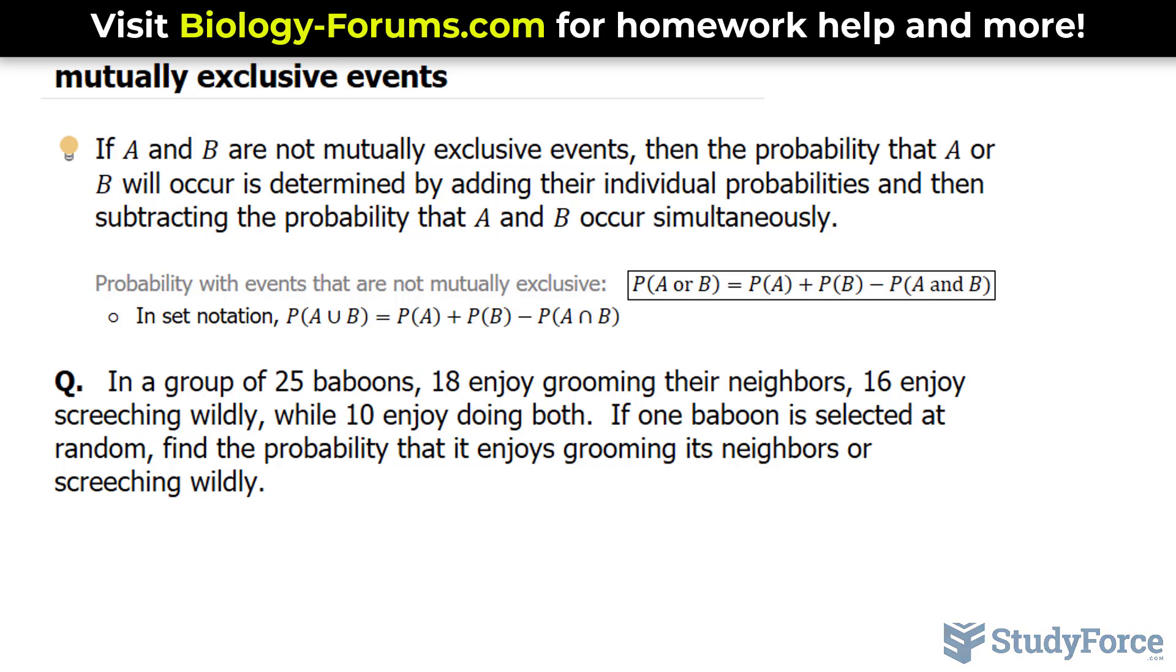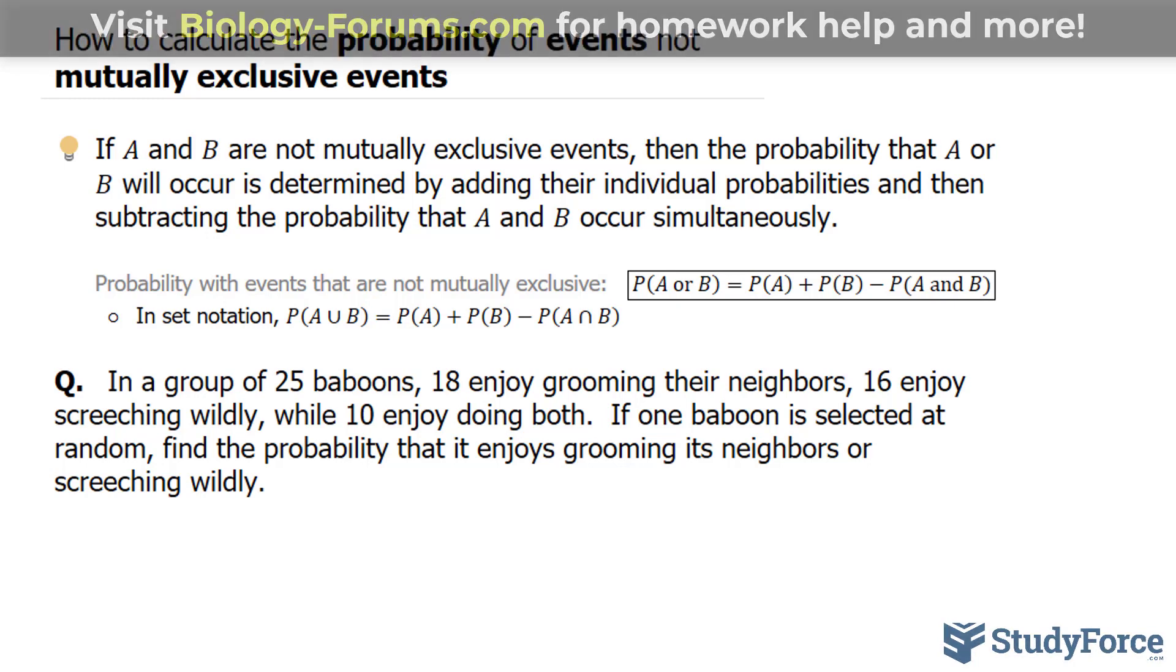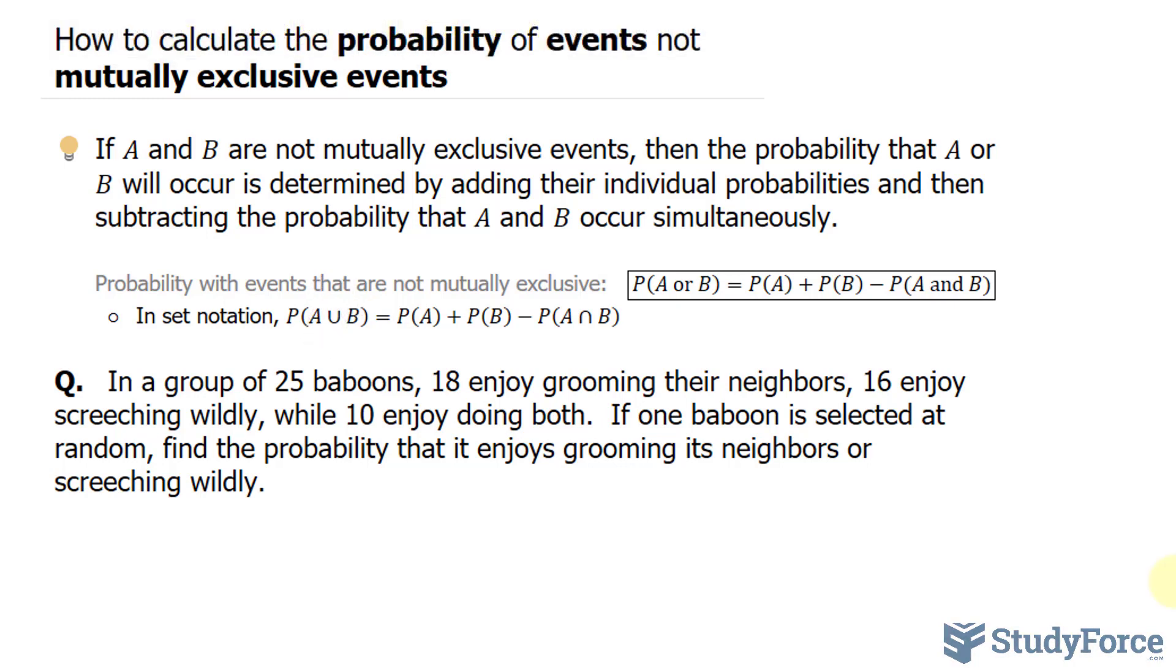And just like before in our video about mutually exclusive events, we will use the union symbol, but in our statement, we have this other symbol known as the intersection symbol, and that's another way of writing AND.